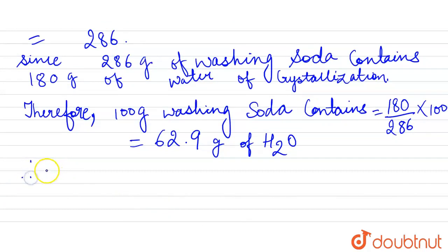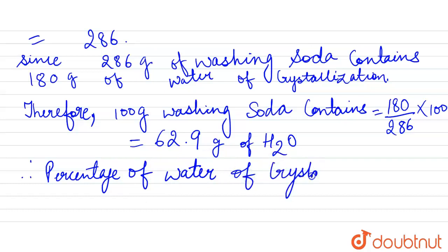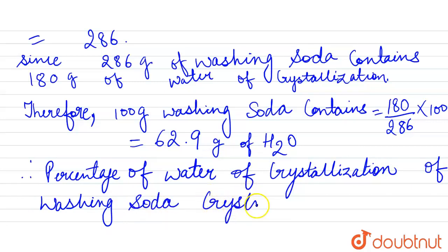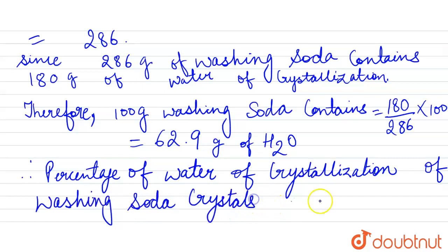So therefore, percentage of water of crystallization of washing soda crystals is equal to 62.9.